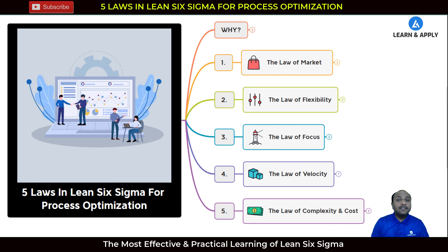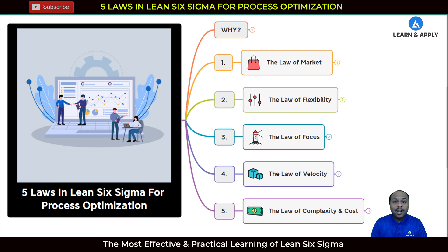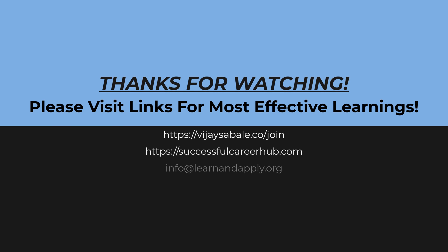These are the five important laws in Lean Six Sigma for process optimization. I'm sure that from this video you've got an idea about why they are important and why we need to follow them. Let's learn another important topic in the next video. Thank you.